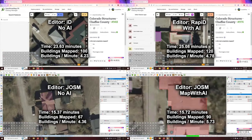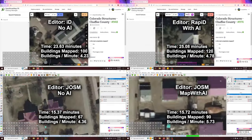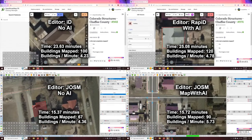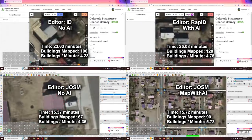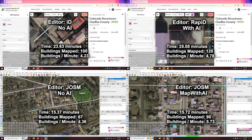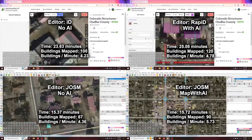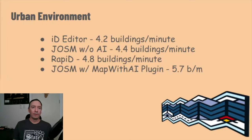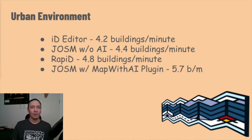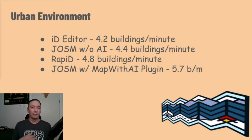These are the results after mapping using these methods. I must re-emphasize that the metrics presented here are not based on a comprehensive study — the time spent and buildings mapped were solely from my individual mapping experience. You can see on this slide that with the iD Editor I mapped roughly 4.2 buildings per minute, with JOSM 4.4, Rapid 4.8, and JOSM with the Map with AI plugin 5.7. It's pretty clear that for me personally, the AI-assisted methods gave a significant advantage.